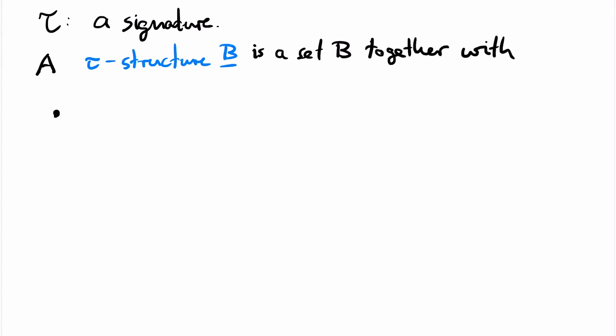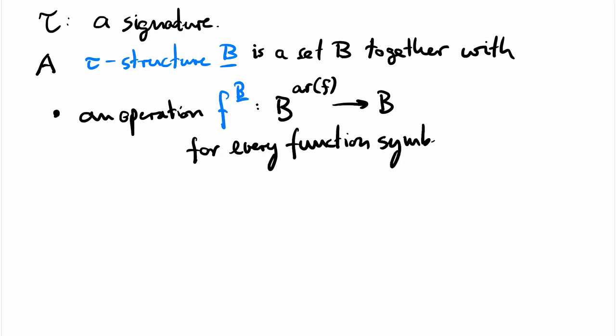Then the structure has for each function symbol f in the signature an operation over B of the respective arity. We write the structure into the superscript of the function symbol to denote the respective operation of the structure.